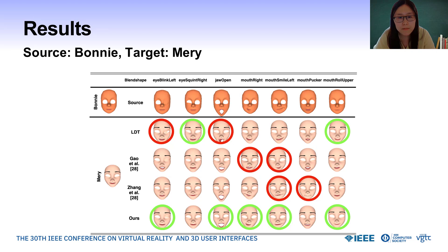When it comes to the blend shapes mouth right and mouth smile left, the LDT method, Gauss's method, and Zhang's method all may lead to deformation in irrelevant areas and incorrect shape. In contrast, our method produces blend shapes of high quality with preserved shape and symmetry and no such issues. The blend shape mouth pucker posed a significant challenge for our method. Obtaining the blend shape for mouth right is a difficult task for all baseline methods. The LDT method may result in an unsmooth shape, while the methods proposed by Gauss and Zhang may lead to incorrect shape and corrupted deformation of the mouth. Each of these methods has its own limitations when generating accurate and realistic blend shapes for this particular expression.